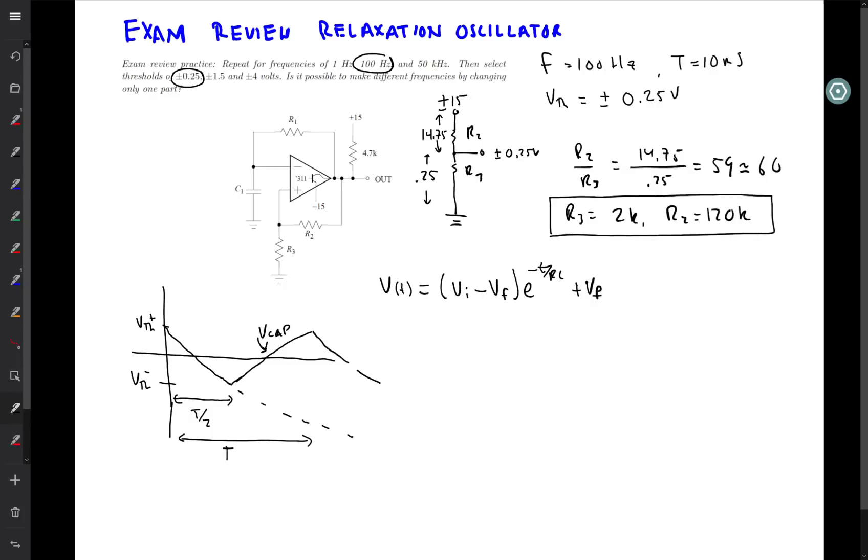Now, the initial voltage in this case is whatever the positive threshold is. And the final voltage in this case is minus 15. So this formula then looks like 0.25 minus minus 15 volts, e to the minus t over RC, plus minus 15 volts. And that's going to wind up equaling at our canonical time at t over 2 equal to minus our negative threshold, which in this case is minus 0.25 volts. So this looks a little messy at first, but it's pretty easy to clean up. You can see that this is basically equal to 15.25 e to the minus t over RC. And that is going to be, when I take that to the other side of the equation, 14.75 volts.